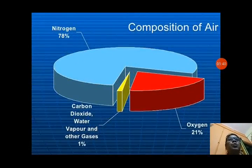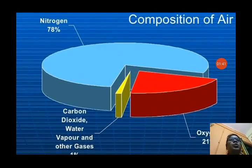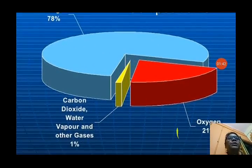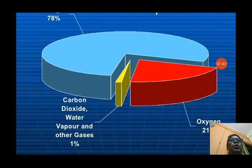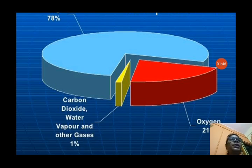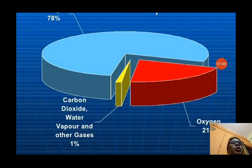You can see the composition of air here: nitrogen 78%, carbon dioxide, water vapor and other gases 1%, and oxygen shown in red is 21%.